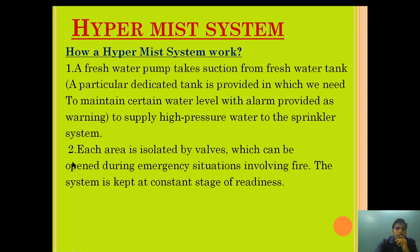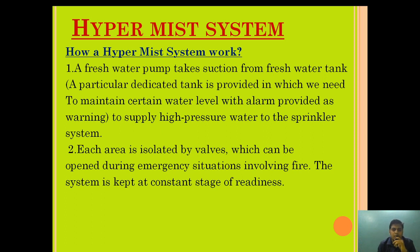Now, how does a Hypermist system work? A fresh water pump takes suction from a dedicated fresh water tank. A particular dedicated tank is provided, and we need to maintain a certain water level with an alarm provided as a warning. On a ship, a specific tank — for example, the starboard tank — is dedicated for the Hypermist system, with a marking indicating the alarm level. If water goes below that level, the alarm activates. Each area is isolated by a valve which can be opened during a fire emergency.